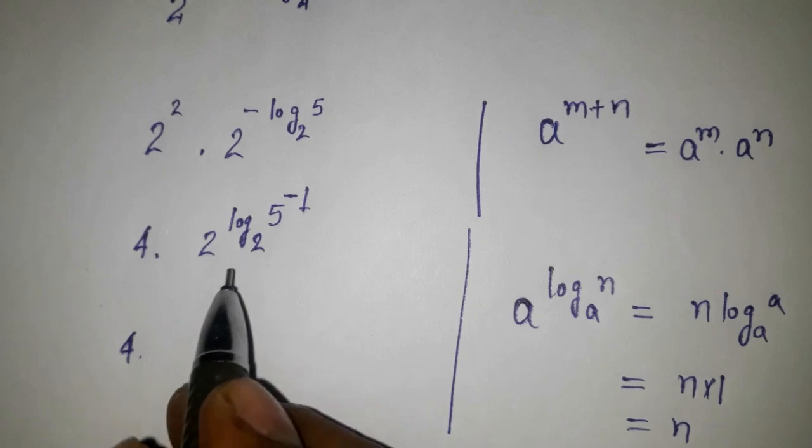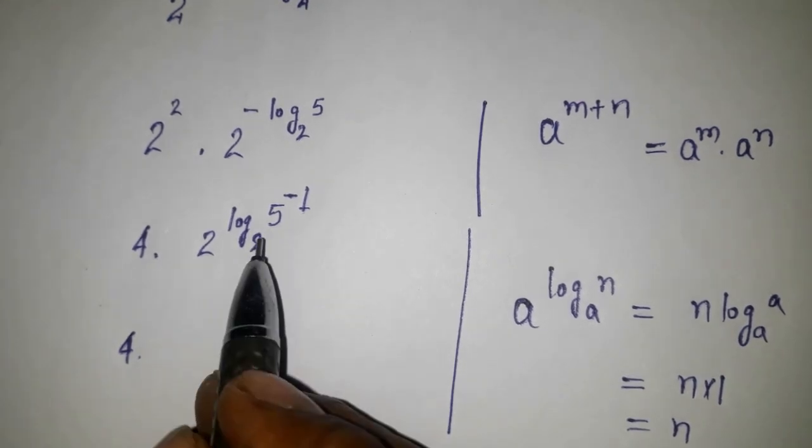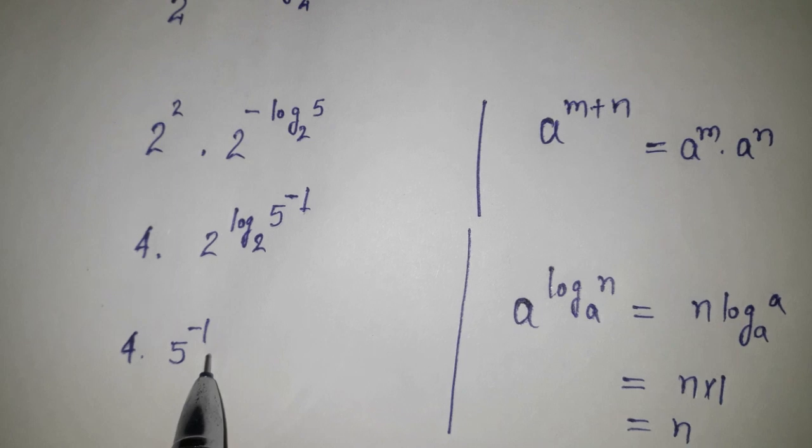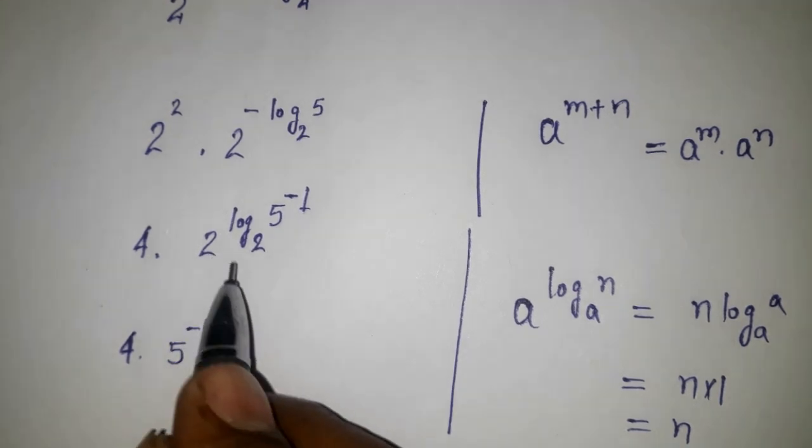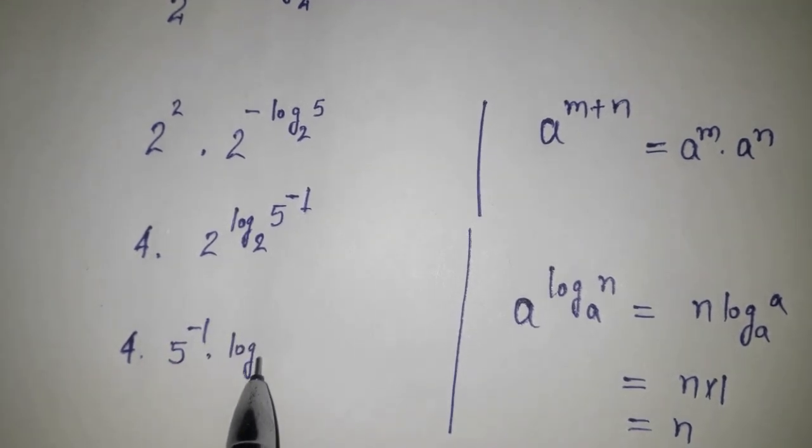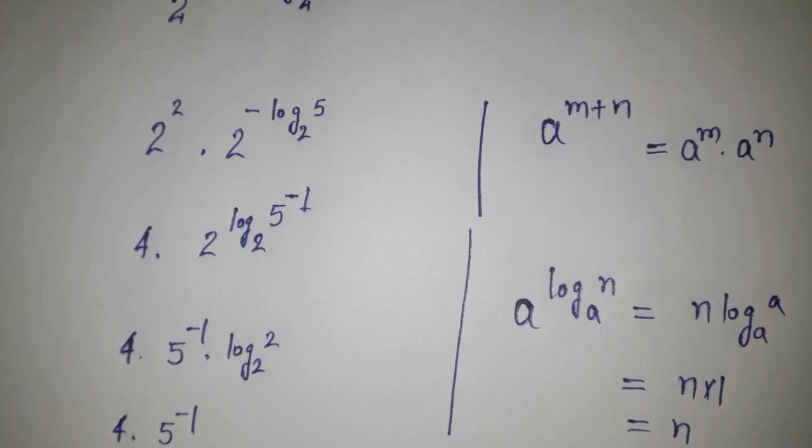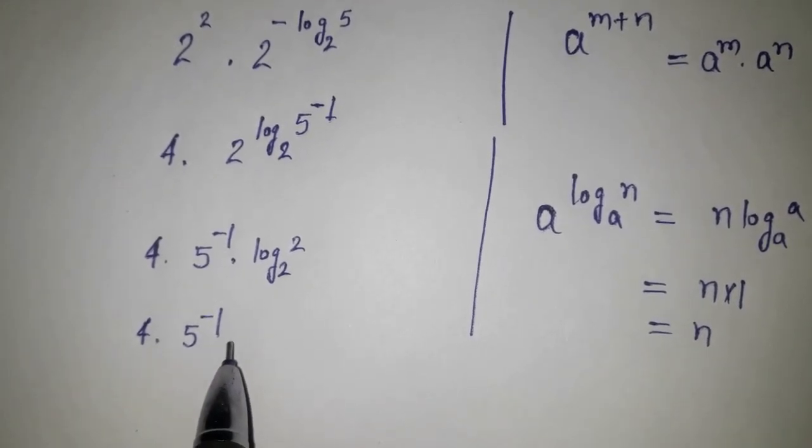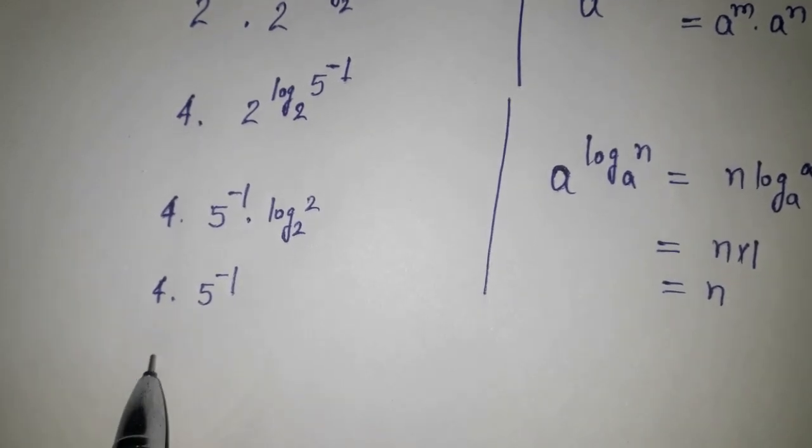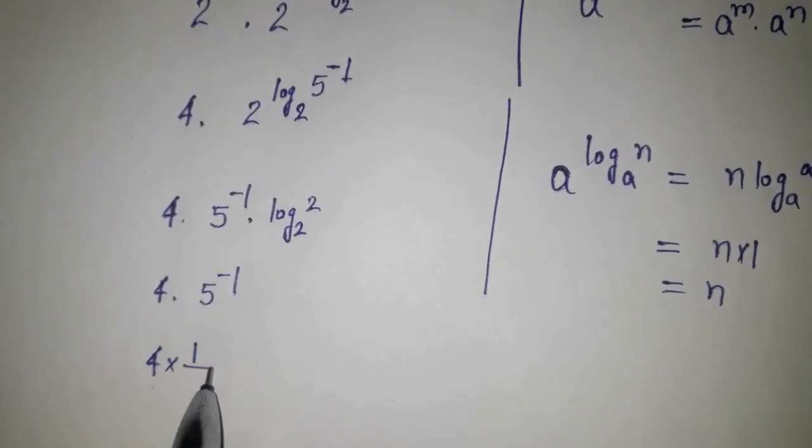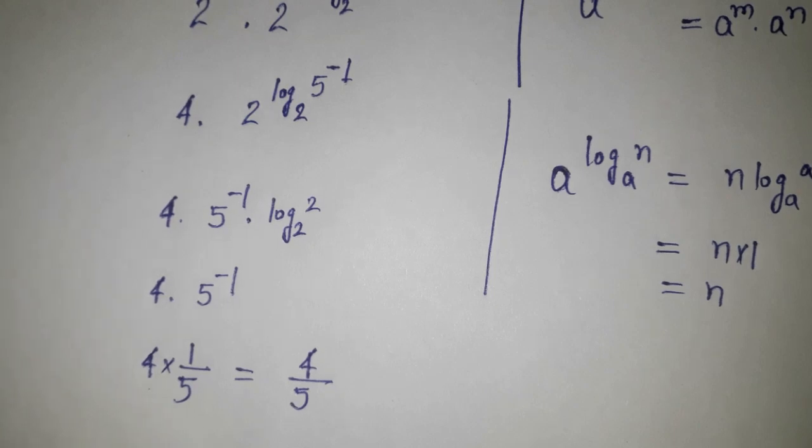Now we can come here over this 5 to the power minus 1 over here, and it will be log 2 of 2, so this will be 1. So we have 4 into 5 to the power negative 1, and it becomes 4 into 1 upon 5, that is 4 by 5. That's our answer.